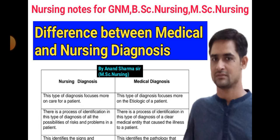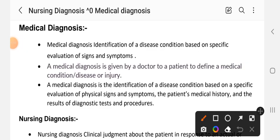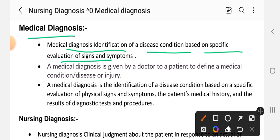The difference between nursing and medical diagnosis — first, medical diagnosis. Medical diagnosis is the identification of a disease condition based on specific evaluation of the signs and symptoms. Medical diagnosis is given by a doctor to a patient to define a medical condition, disease, or injury.